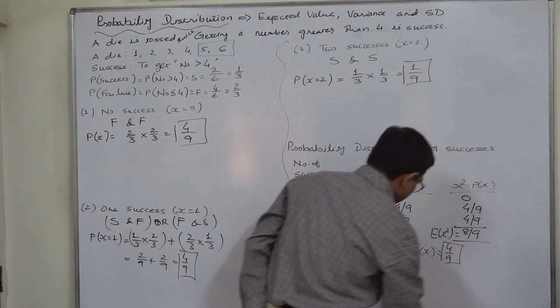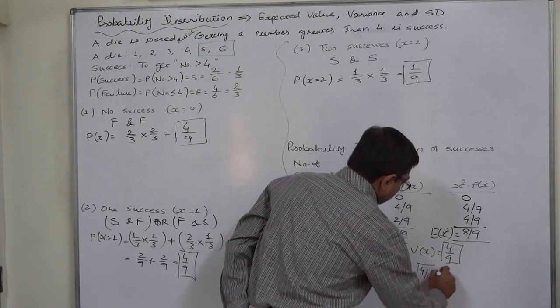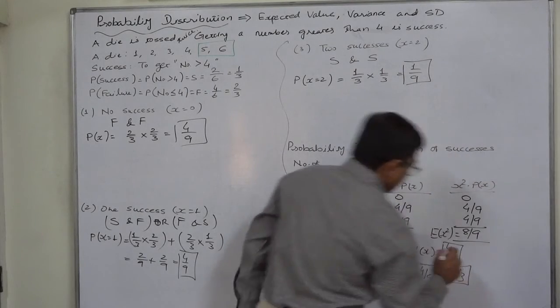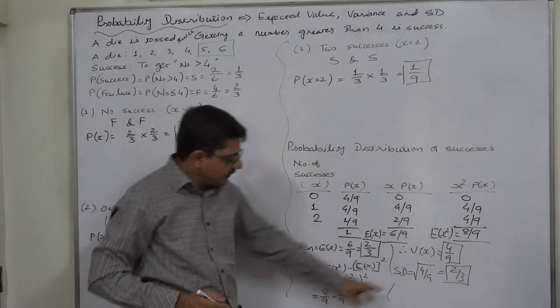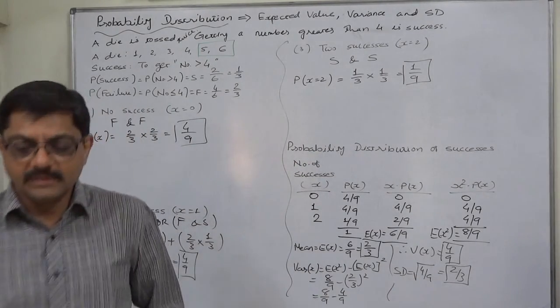Standard deviation is nothing but square root of variance, under root 4 by 9, so it comes to 2 by 3. Thus in this case, mean and standard deviation both are 2 by 3. That's it, thank you very much.